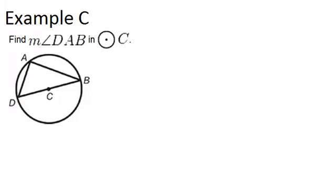Alright, in example C, it says find the measure of angle DAB, so that's right here, in circle C. So because it's called circle C, it means that C is the center of the circle, which means that DB right here, because it goes through the center, must be a diameter.